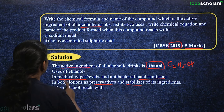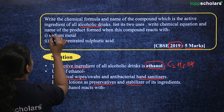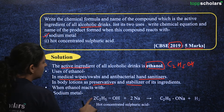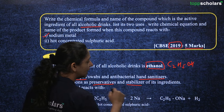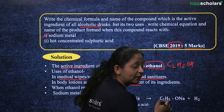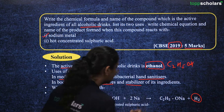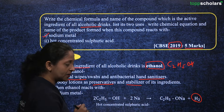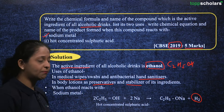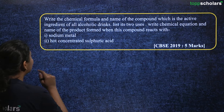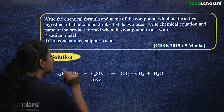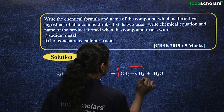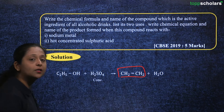When writing the chemical equation for ethanol reacting with sodium metal: C2H5OH + Na → C2H5ONa + H2. It produces sodium ethoxide along with hydrogen gas. When ethanol reacts with hot concentrated sulfuric acid, it produces an alkene along with water.